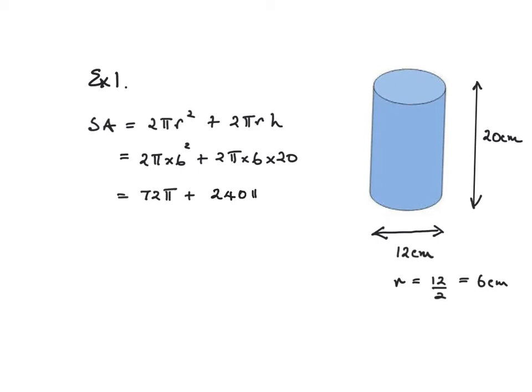We can even add these together and then use the calculator, so 240 plus 72 is 312π and the answer to that is 980.18. And this is an area, surface area, so the units are centimeters squared.